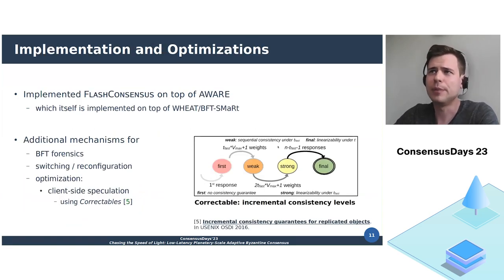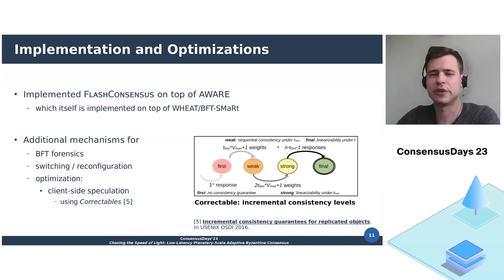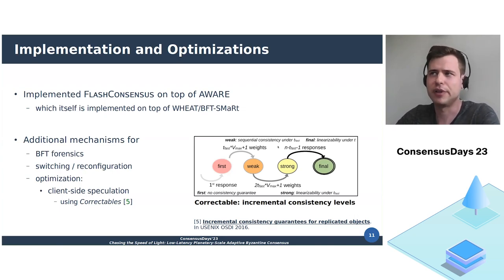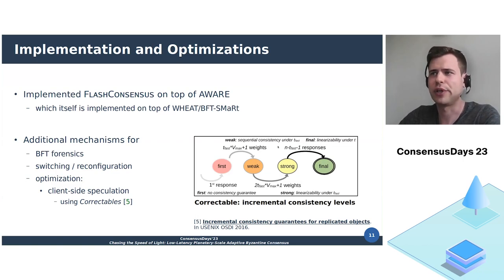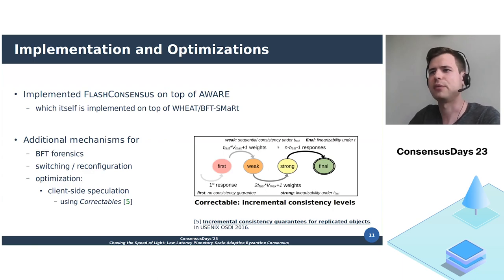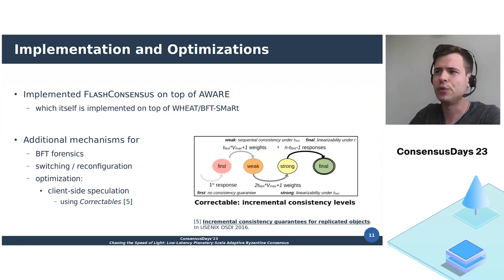We implemented Flash Consensus on top of AWARE, essentially switching between two instances of AWARE configured for different resilience thresholds. AWARE itself is built on top of the BFT-SMaRt framework. The implementation mainly required the integration of BFT protocol forensics, as well as methods for switching and reconfiguration of the system. As an additional optimization, we integrated client-side speculation by using correctables, which allowed us to define incremental consistency guarantees. Here we use four different levels.